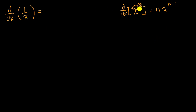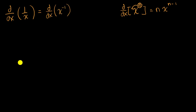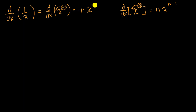But this does not look like that. The key is to appreciate that one over x is the same thing as x to the negative one. So this is the derivative with respect to x of x to the negative one. That's going to be equal to: bring the exponent out front — negative one — times x to the negative one minus one, which gives us negative x to the negative two. And we're done.